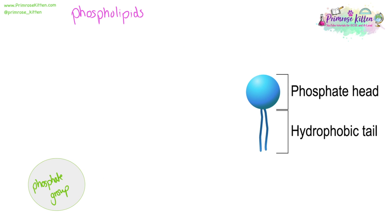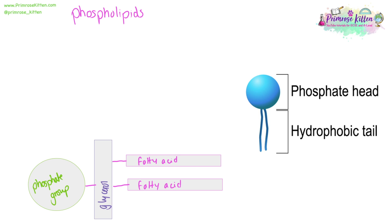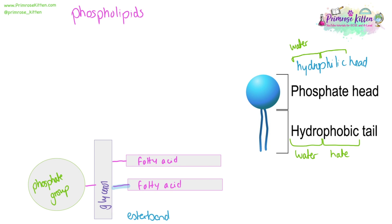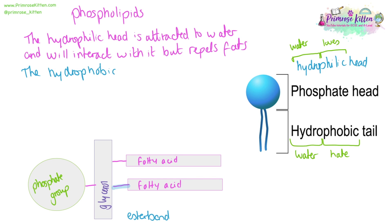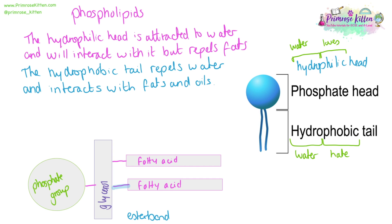A phospholipid is made up of a phosphate head, which is hydrophilic, and a hydrophobic tail. This is another example of where understanding the etymology of words will help you remember their functions. Hydro is water, phobic means hate, and philic means love — so hydrophilic loves water and hydrophobic hates water. Thus, the hydrophilic head is going to be attracted to water, will interact with water, and will repel fats. Conversely, the hydrophobic tail will repel water but will interact readily and easily with fats and oils.